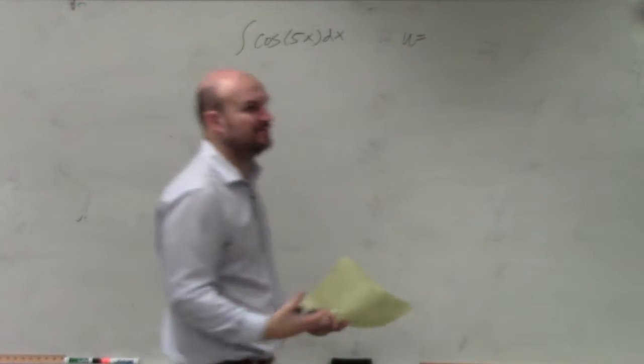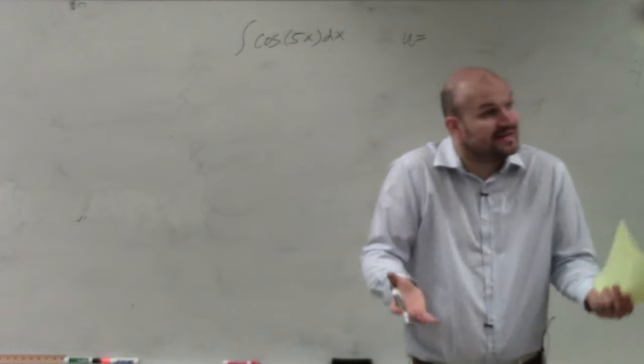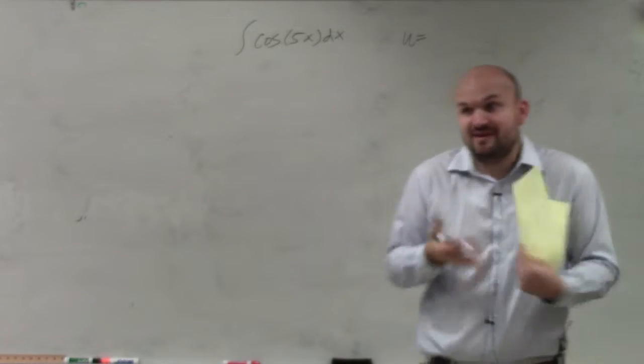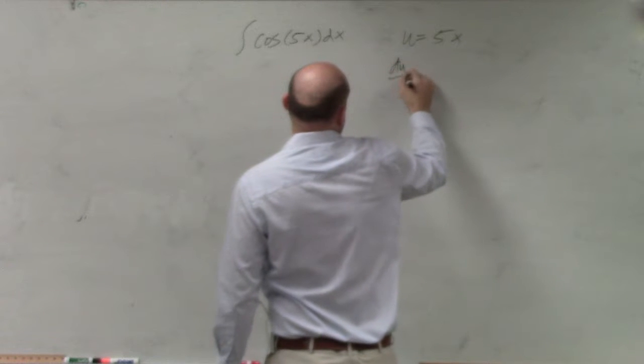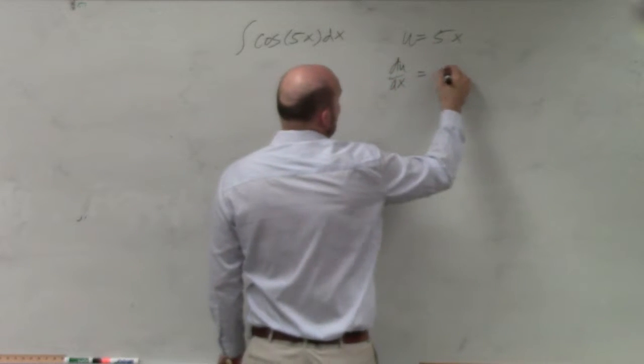Trigonometric functions can be a little tricky, but a lot of times they kind of help us out because we say, oh, well, it's cosine of that 5x. That's going to be my u. So we could say u is equal to 5x. du dx, though, is equal to 5.